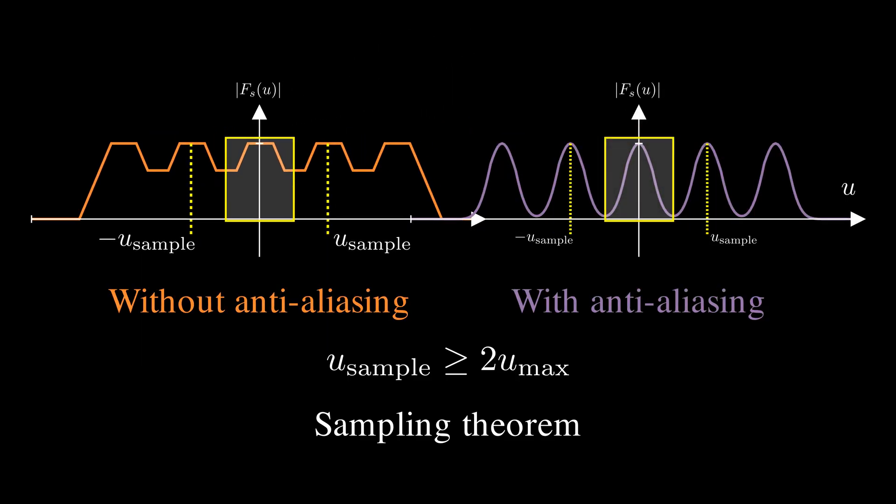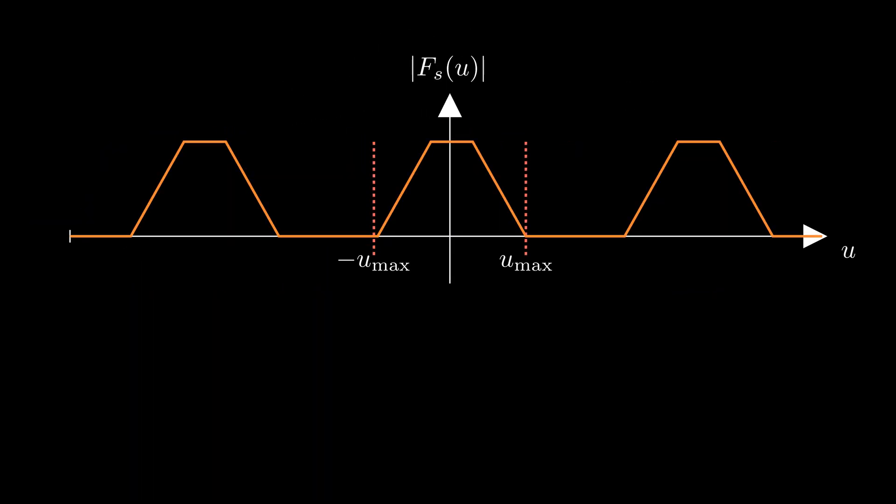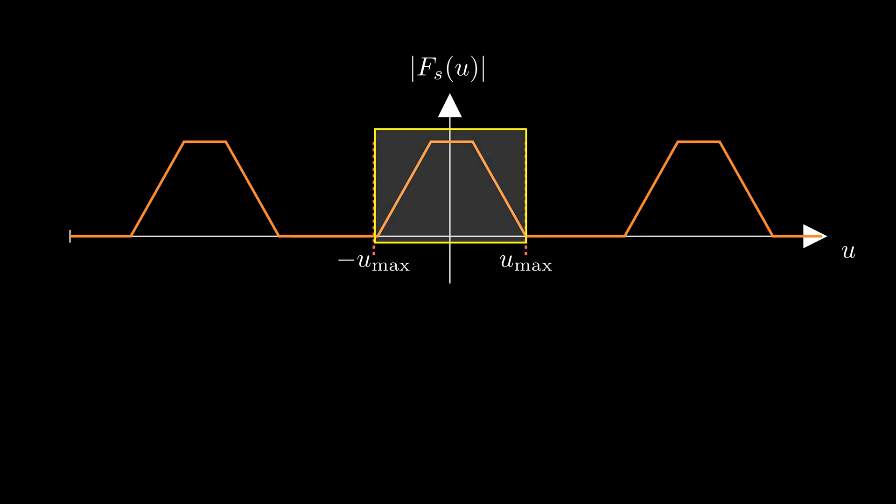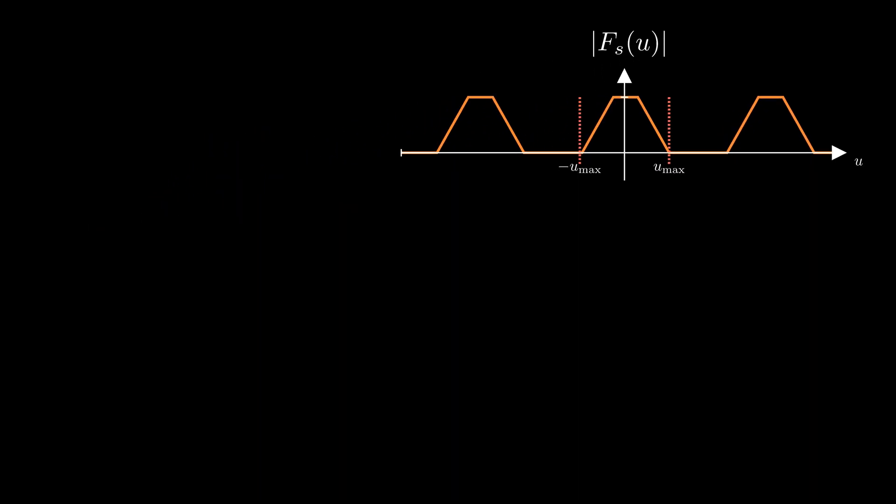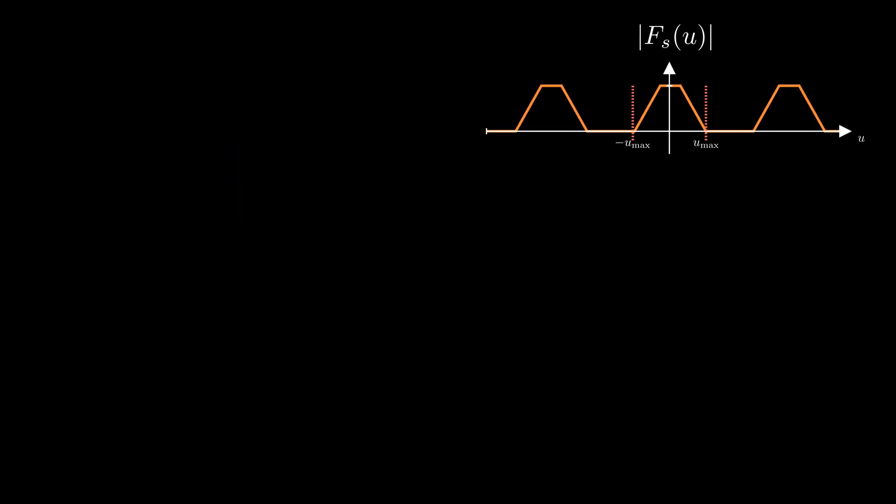Now what's this rectangle that lets us pick the correct frequencies? This is called a reconstruction filter. It helps us reconstruct a continuous signal from the discrete samples. Or in other words, interpolate the missing values between the samples.